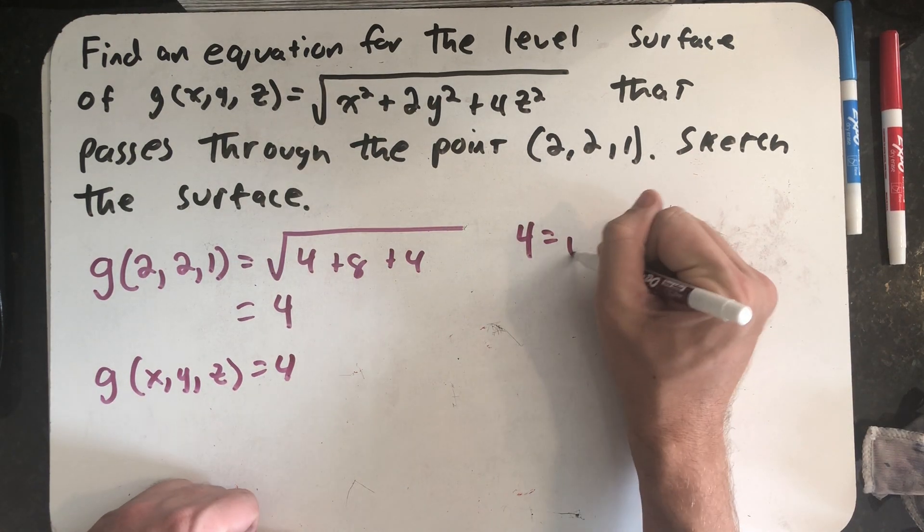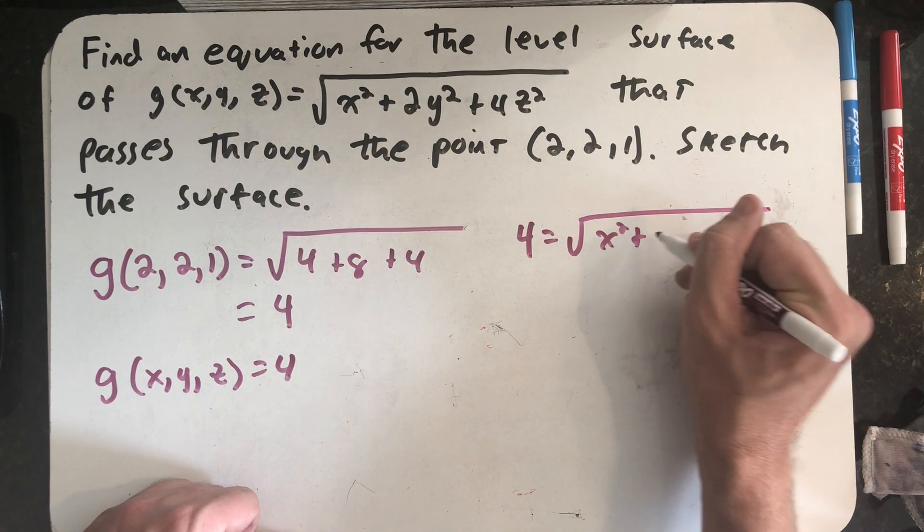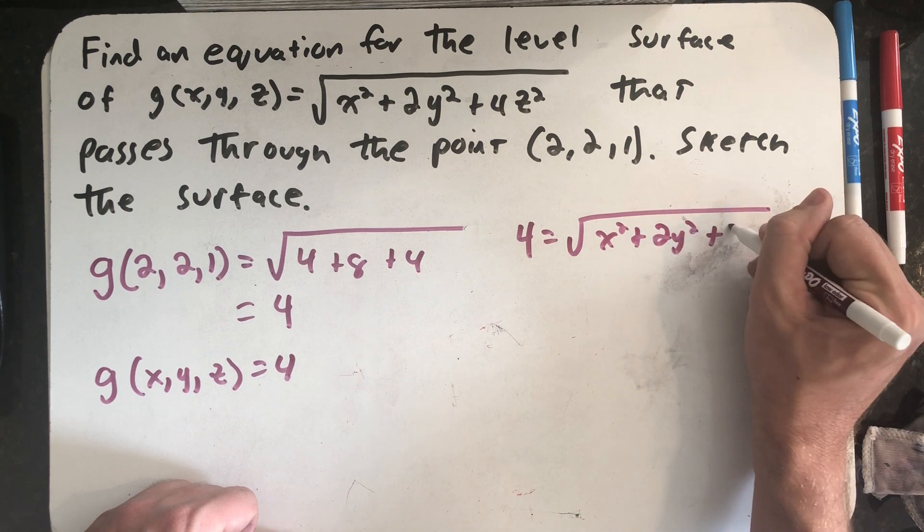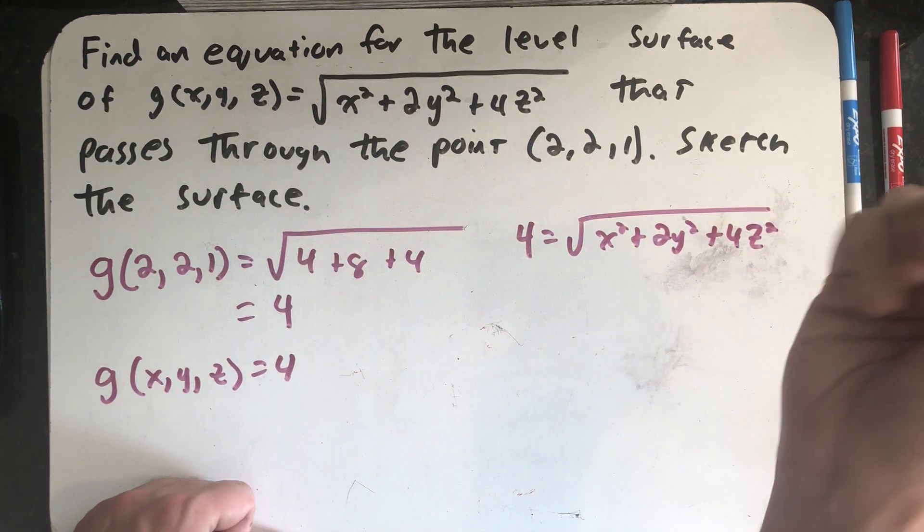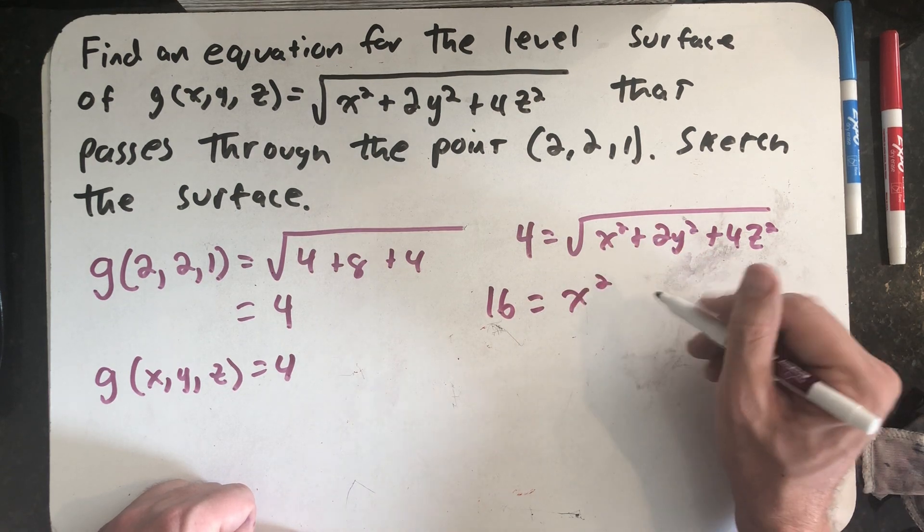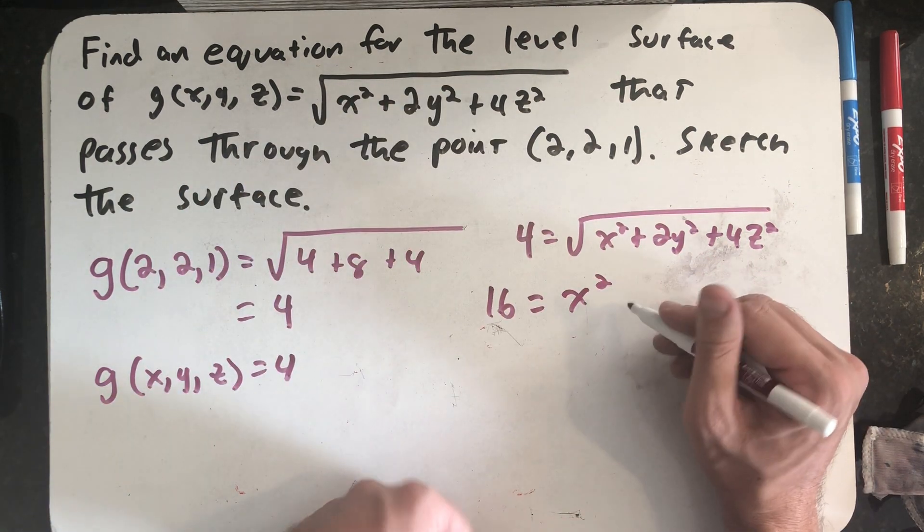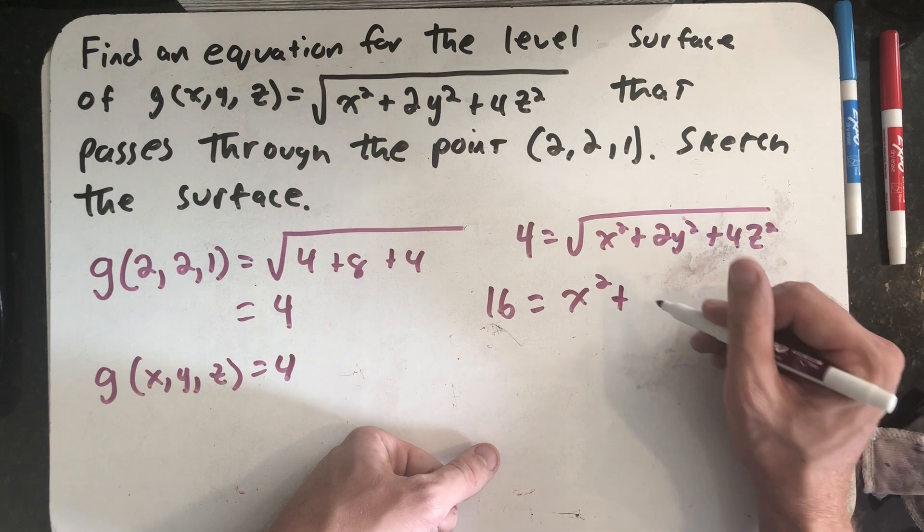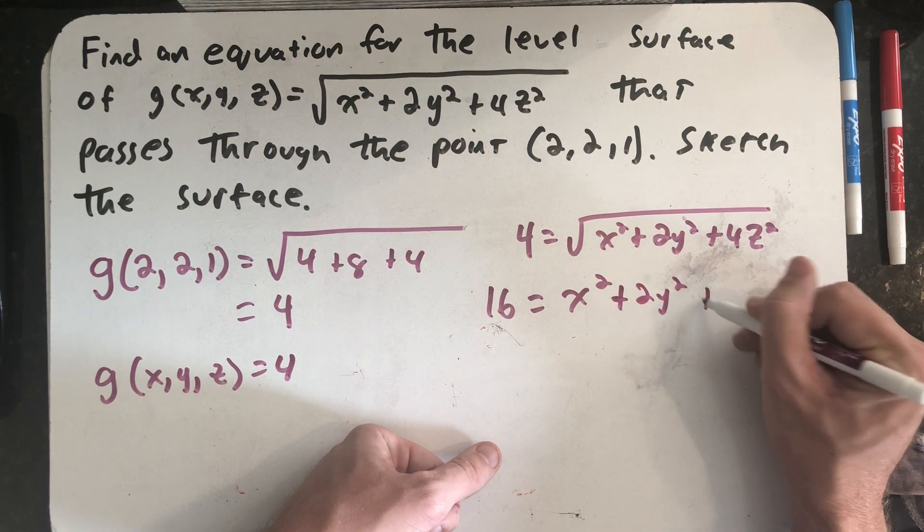So we get 4 equals the square root of x squared plus 2y squared plus 4z squared. I square both sides. Just to make the formula a little easier, all of my w's are going to be positive coming out of that square root, so no harm in squaring both sides.